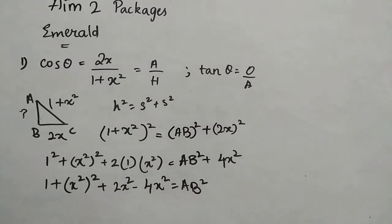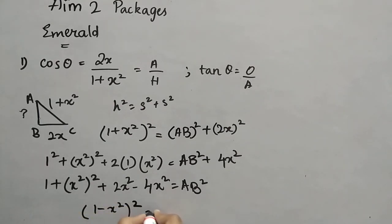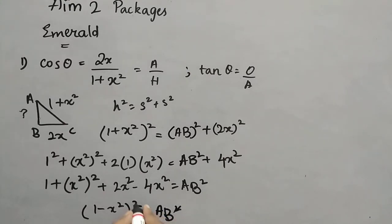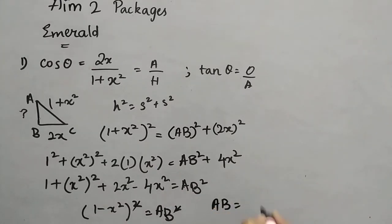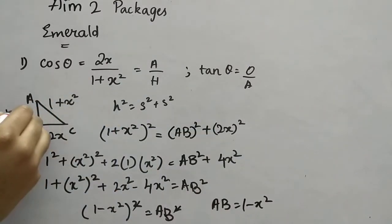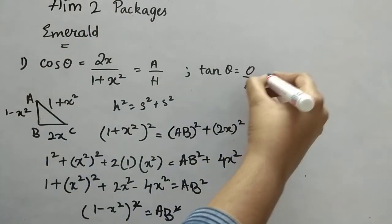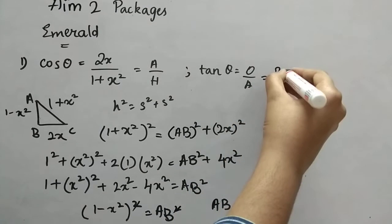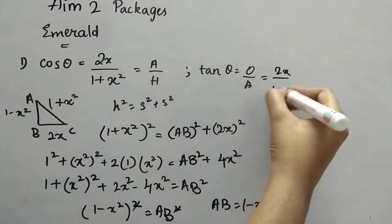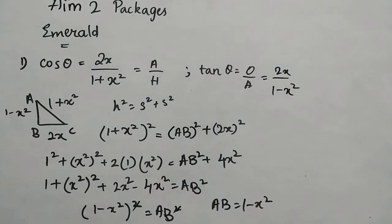So we conclude AB = (1 − x²). Now tan θ is opposite by adjacent, so that is (1 − x²) by 2x. The answer is option B.